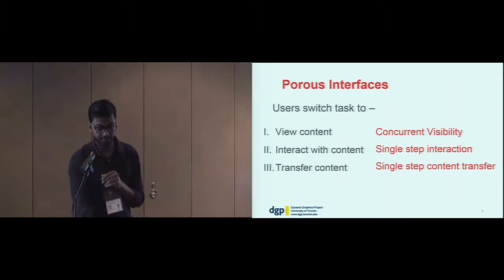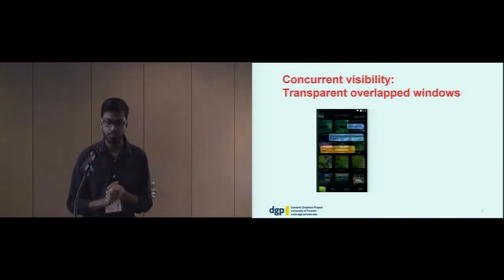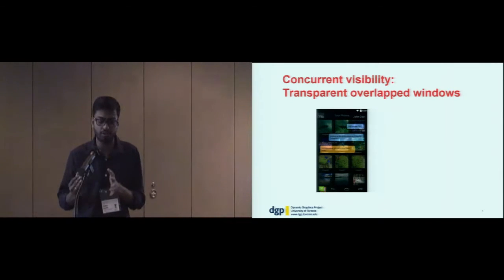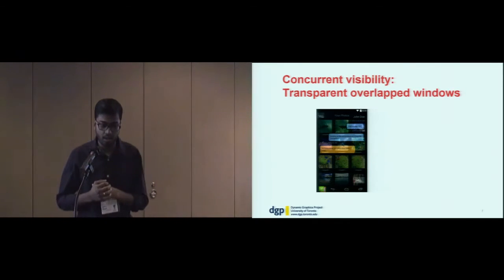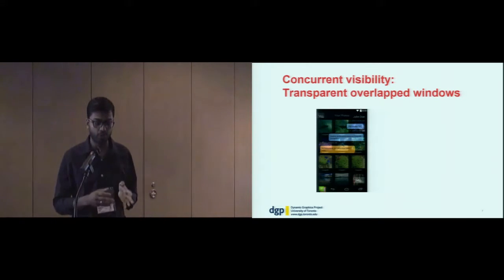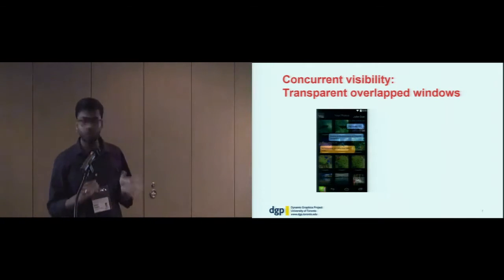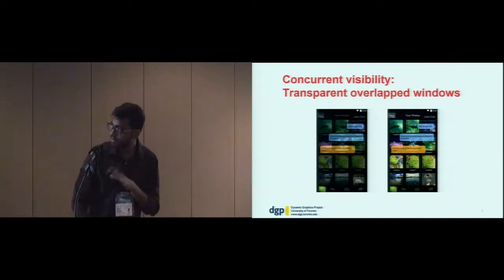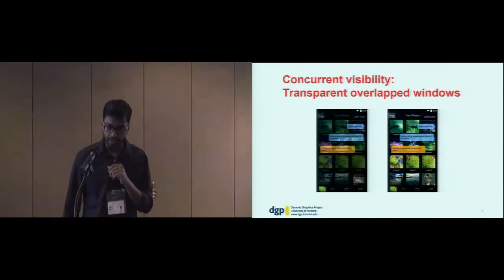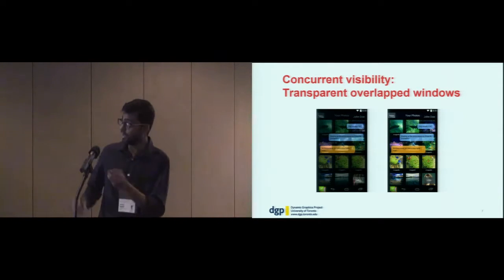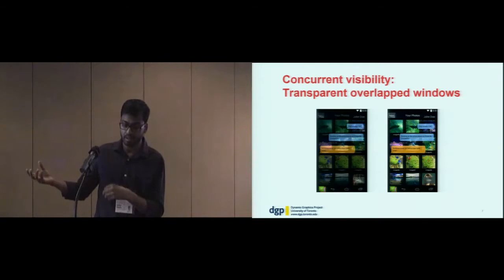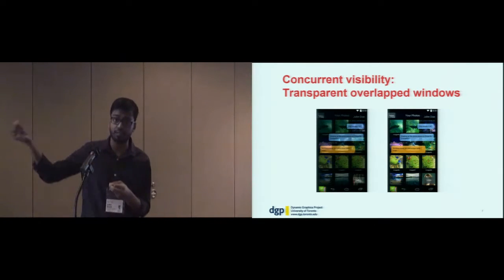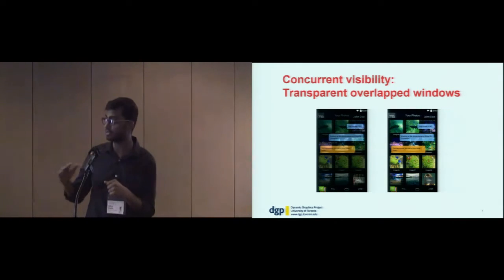Concurrent visibility: if you can't have windows side by side, the simplest solution is to have them on top of each other. So porous interfaces have overlapped, partially transparent windows. Here we see a messaging app on top of a photo gallery app. We modify this so that only the useful parts of a window are visible. In the messaging app, which had a black background, we remove the background, make it transparent, and just the chat bubbles are available for visibility — the rest is completely transparent.